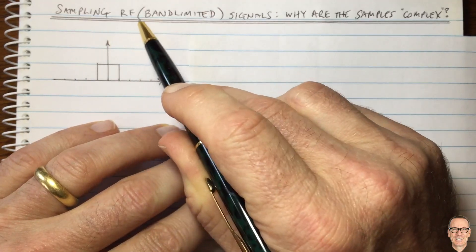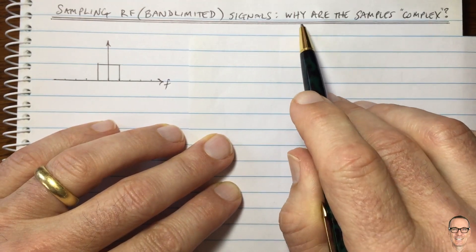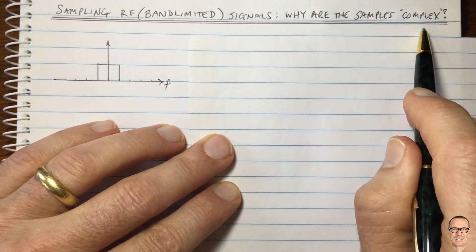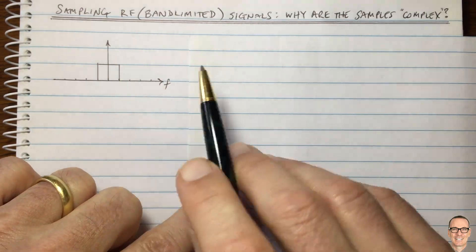So let's look at sampling RF band-limited signals and ask ourselves the question, why are the samples complex?